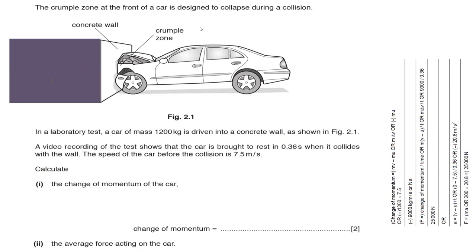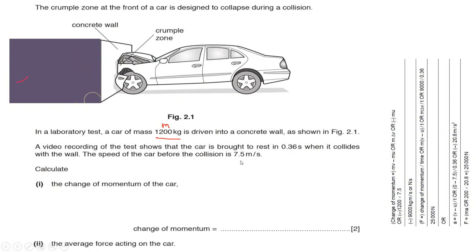Another question: the crumple zones at the front of a car are designed to collapse during a collision. In a lab test, a car of mass 1200 kg is driven into a concrete wall. A video recording shows the car is brought to rest in 0.36 seconds. The speed before the collision is 7.5 m/s, and the final speed is 0 m/s.